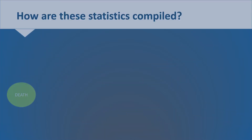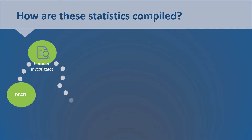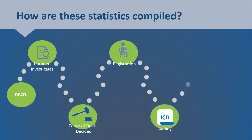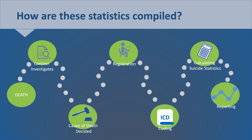How are these statistics compiled? These statistics are compiled using information from the Coroner Service, which flows into the General Register Office to enable the death to be registered. When a death is unexpected or suspected of suicide, the death is referred to the coroner. The coroner investigates and decides on the cause of death. The death is then registered with the General Register Office and this information is made available to NISRA to append an ICD-10 code and analyse and publish suicide statistics.